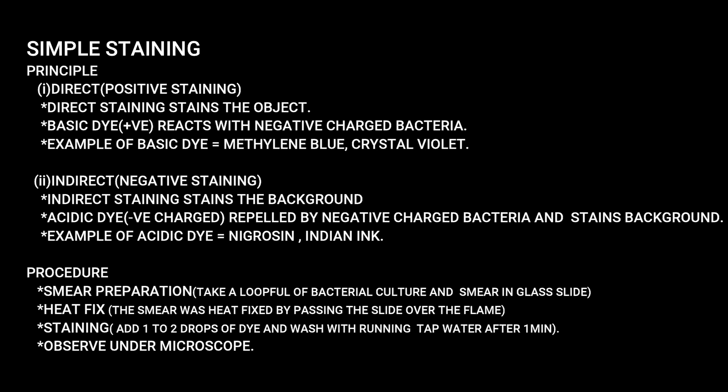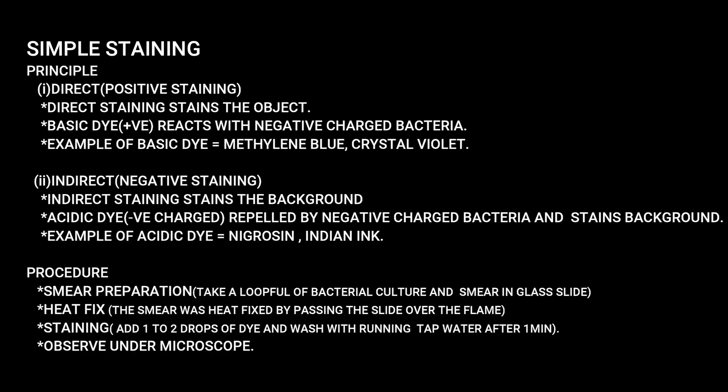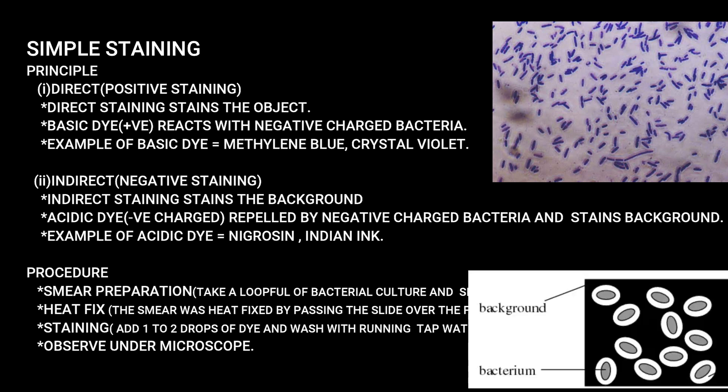This principle is simple. In direct staining, the object is the bacteria — bacteria attract the color using basic dye such as methylene blue or crystal violet. In indirect staining, the background is stained using acidic dye — the bacteria repel the stain. The background gets stained instead. Acidic dye examples: nigrosin and Indian ink.